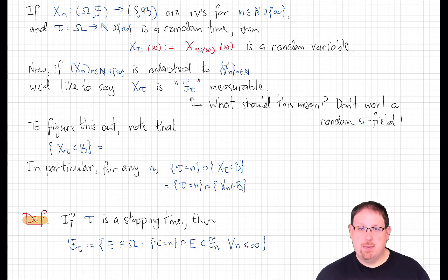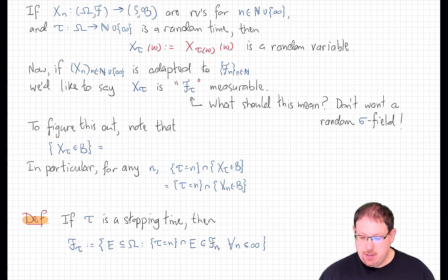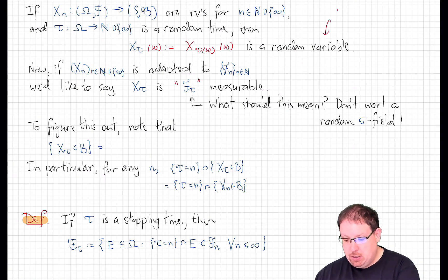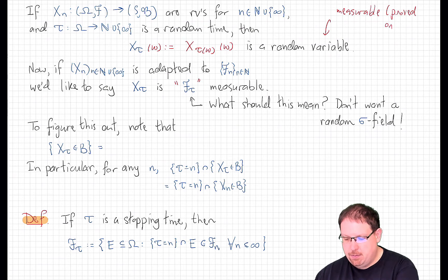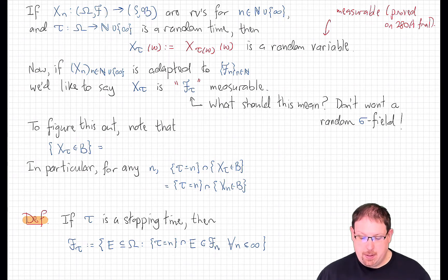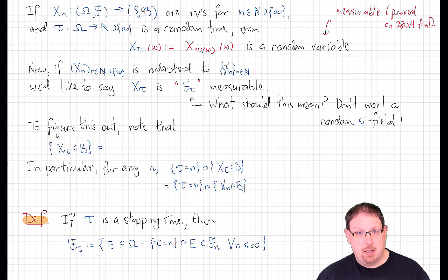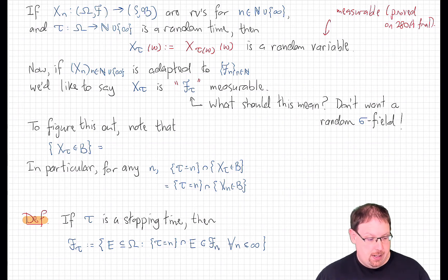Of course, we have to be clear: is it really a random variable? Is it measurable? Well, in this discrete context, it's always measurable, and that actually was something that you proved on the final exam for 280a. When later on we talk about the continuous time versions of these things, this becomes a lot dicier. But for now, we're sticking to discrete time.